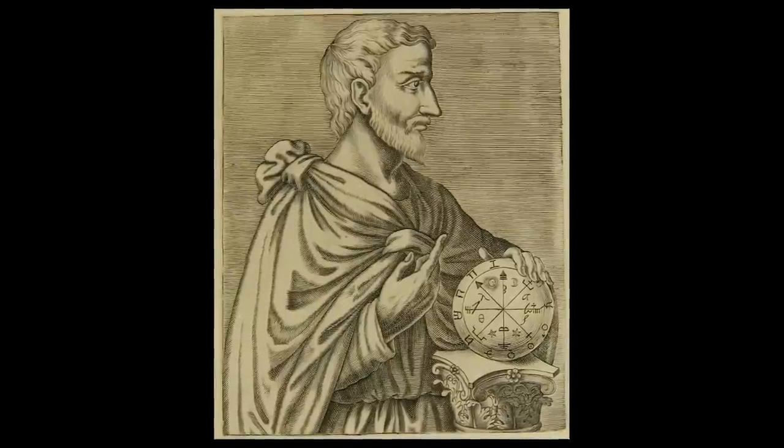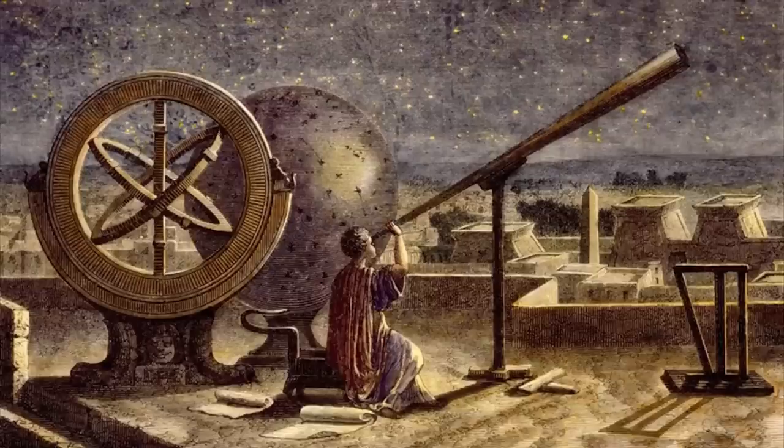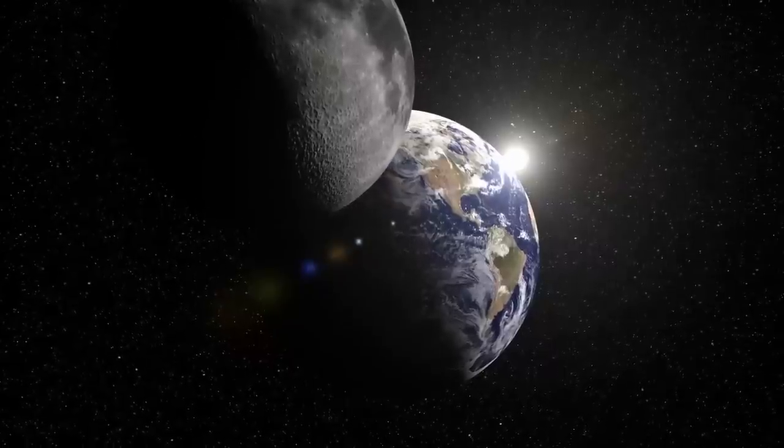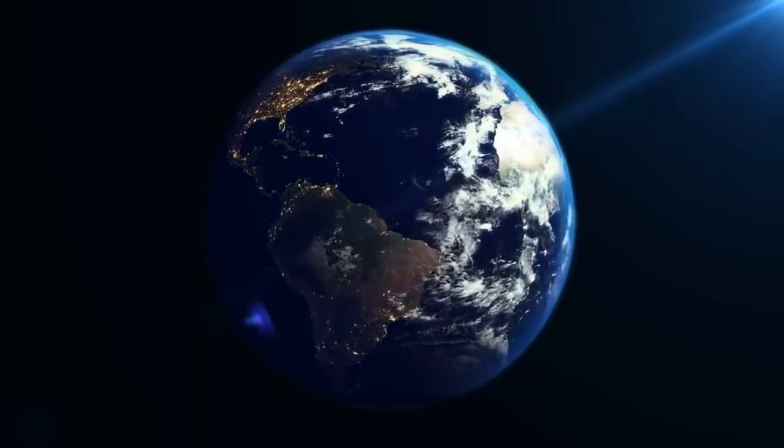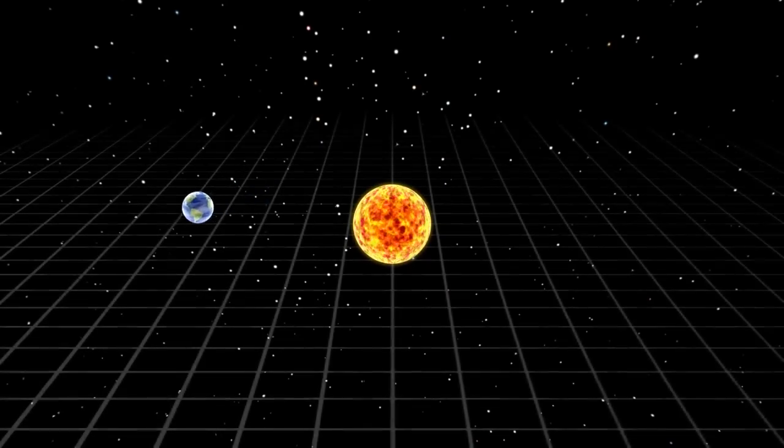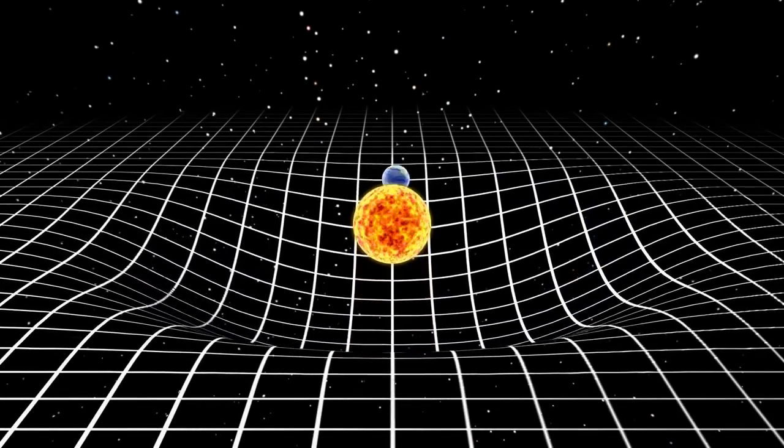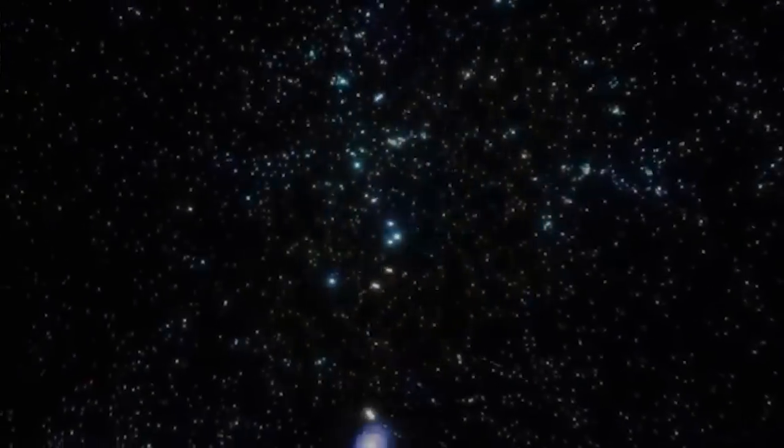In 530 BC, Pythagoras, a pre-Socratic Greek philosopher, supported the idea that the moon, sun, stars, and the five planets observable to the naked eye, revolve around the earth, which is spherical in shape. He also supported the fact that the morning and evening stars were the same star.